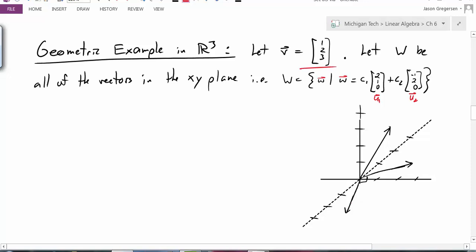Now we want to find some vector in w plus some vector in w perp that give us v. What we want to do first is project v down onto the xy plane. We can kind of see what that's going to look like. But how do we calculate what that vector exactly is?